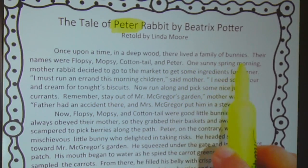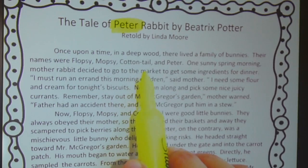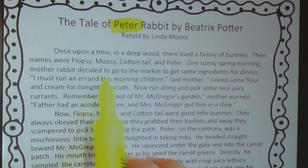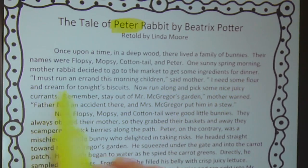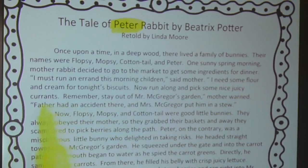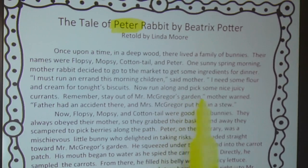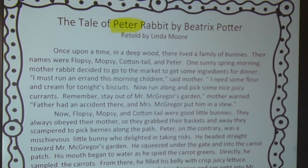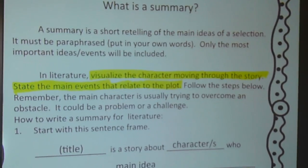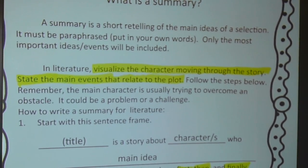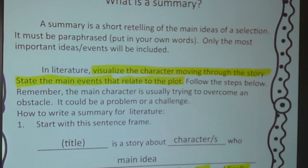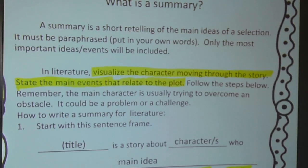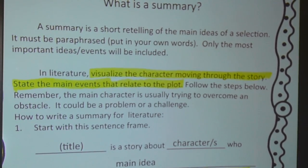Let's start with the first paragraph. Once upon a time, in a deep wood, there lived a family of bunnies. Their names were Flopsy, Mopsy, Cottontail, and Peter. One sunny spring morning, Mother Rabbit decided to go to the market. 'I must run an errand this morning, children,' said Mother. 'I need some flour and cream for tonight's biscuits. Now run along and pick some nice juicy currants. Remember, stay out of Mr. McGregor's garden,' Mother warned. 'Father had an accident there, and Mrs. McGregor put him in a stew.' Now boys and girls, let's think about how we would summarize that first paragraph. When I close my eyes, the only thing I see is Mother Rabbit talking to the four bunnies — there's no movement of the main character Peter.